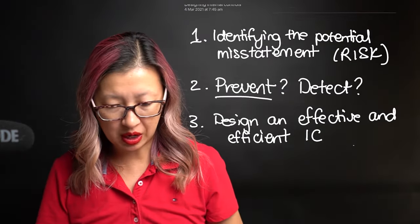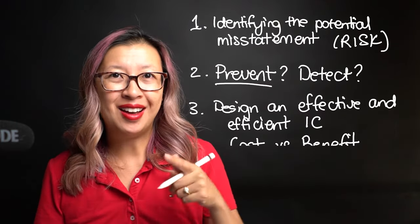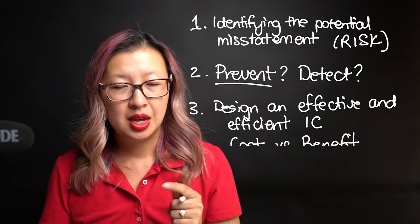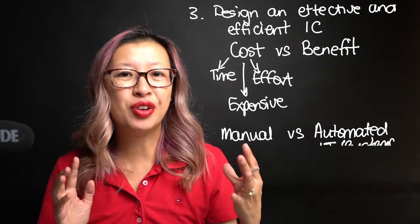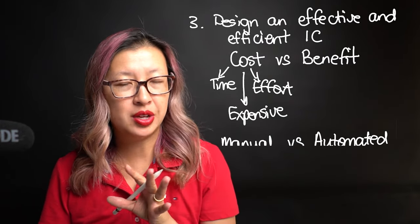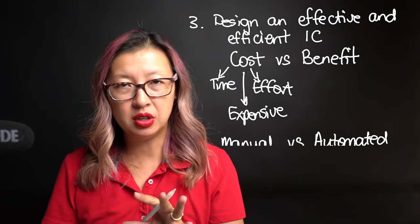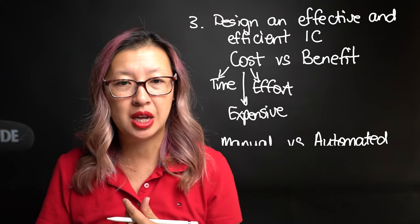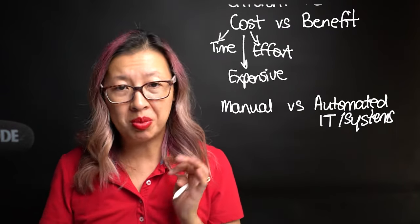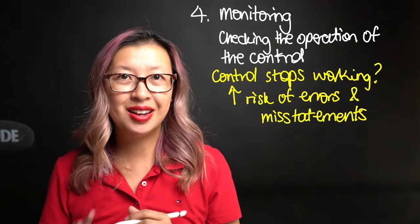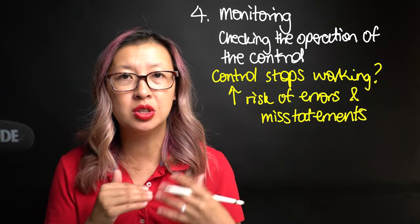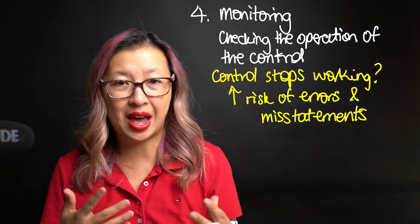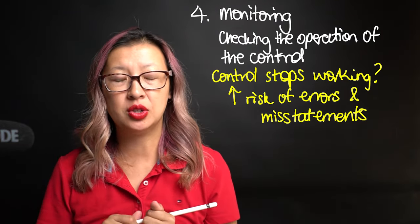To recap: number one, identify the potential misstatements. Number two, decide whether you want to prevent or detect. Number three, design an effective and efficient internal control — thinking about cost versus benefit, including the time, the dollars to implement it, and the effort it might take. Think about whether you want manual or automated systems. And then consider the monitoring — what are we doing to monitor this control to make sure it's always working? Is it that if something goes wrong, a system flags with us? So now let's look at a practical example.